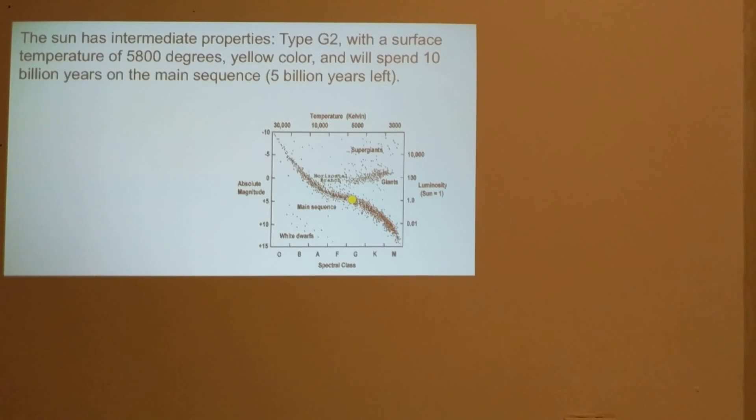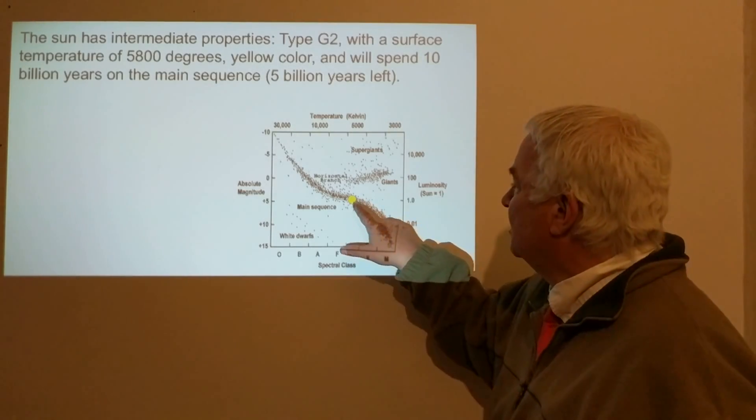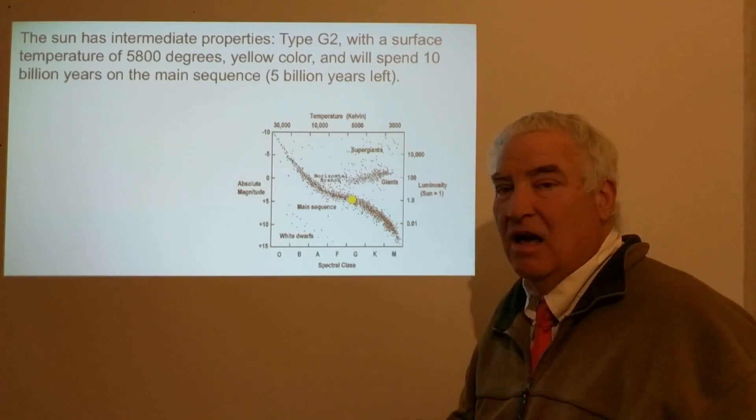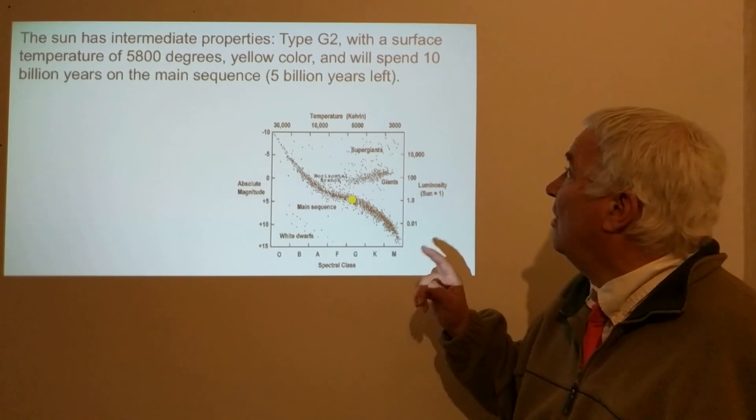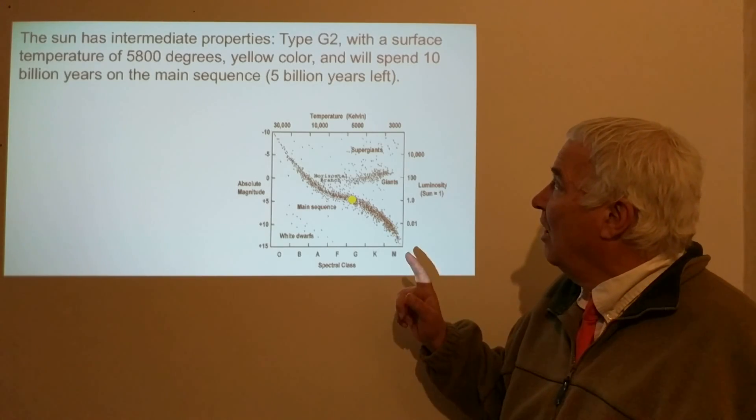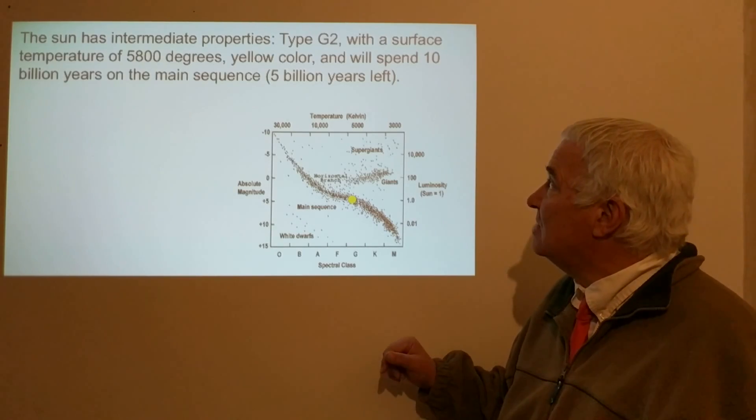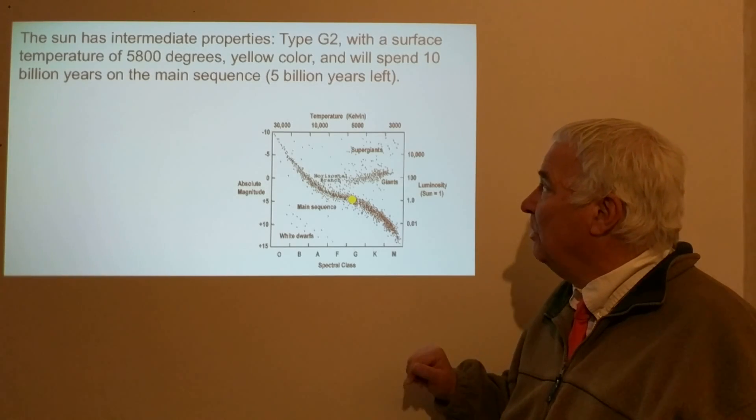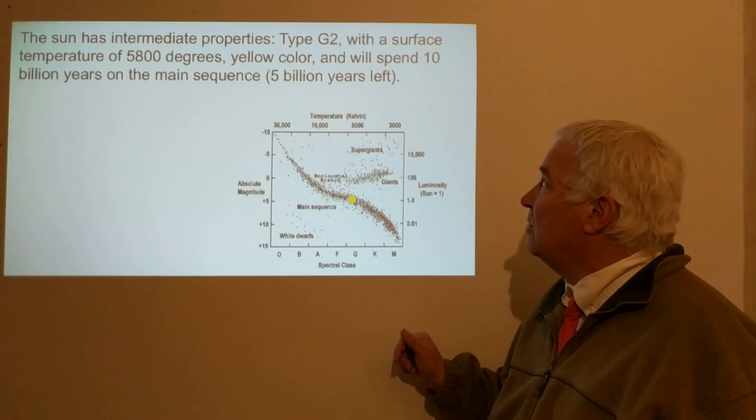The Sun has intermediate properties. It's yellow, it's G2 is the spectral type, this is the surface temperature of 5,800 degrees, and it will spend about 10 billion years on the main sequence.